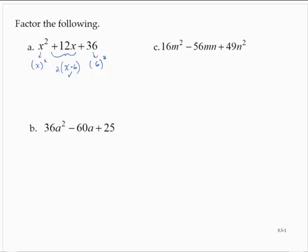And so what that tells me is I can factor this as a square of a binomial containing x and 6. And the sign in the binomial will match the sign in front of the 12x. So I can factor x squared plus 12x plus 36 as x plus 6 squared.